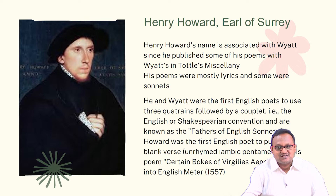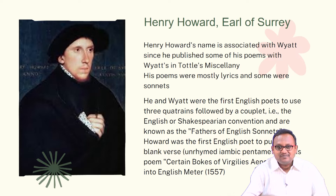The Petrarchan sonnet, if you recall, consists of two stanzas: one is an octave — an eight-line stanza — and another is a sestet, a six-line one. Whereas the Shakespearean form uses three quatrains — three four-line stanzas, giving twelve lines — plus a couplet.